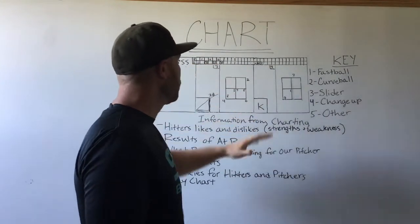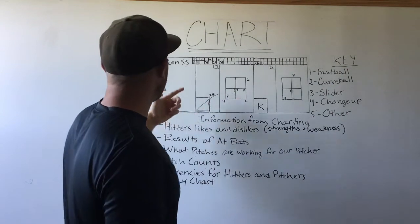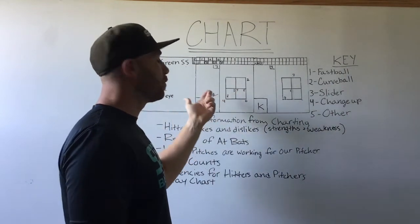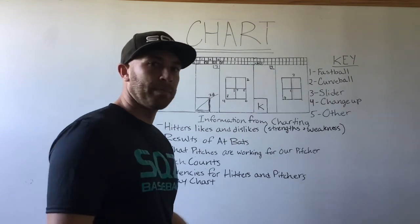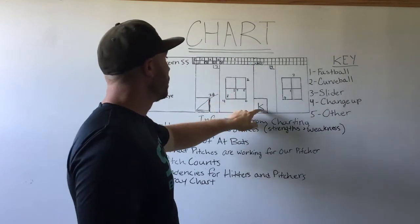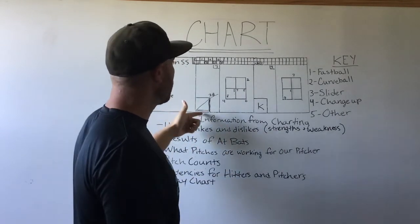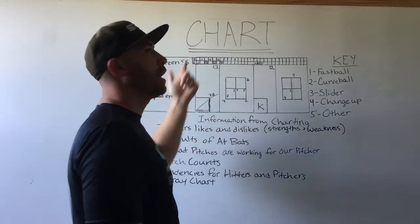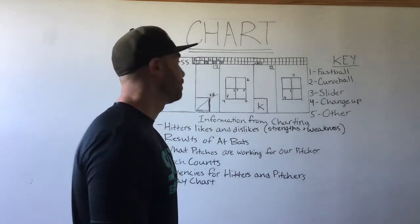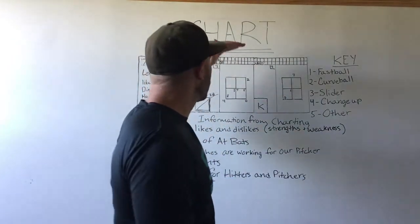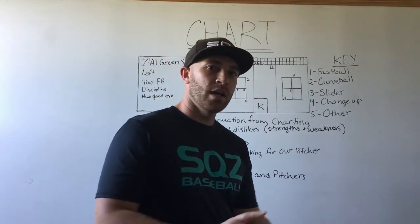The last one is a spray chart. Al goes up and hits the ball up the middle for a double in his first at-bat, so we're going to play Al straight up. The next at-bat he strikes out, but there might be other players that hit a ground ball to first and then a fly ball to right field — and we're going to play him a little bit more pull in his third at-bat.